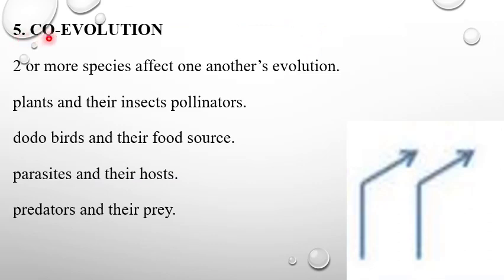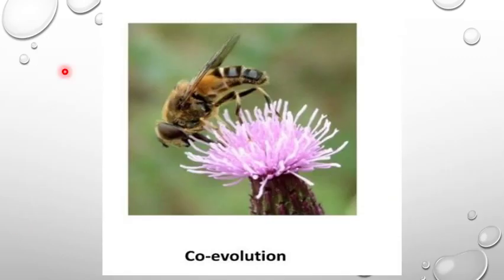Now, the fifth one is co-evolution. Two or more species affect one another's evolution. For example, plants and their insect pollinators, dodo birds and their food source, parasites and their hosts, predators and their prey. In this diagram, you can see the co-evolution mechanism.